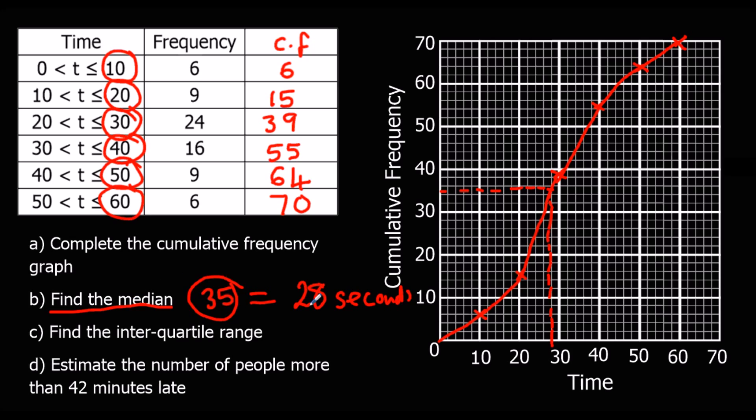The interquartile range. The upper quartile and lower quartile. The median is half the data, which was the 35th piece. So the quarters are, well, so we're going to go one quarter of 70 is half of this. So 17.5. So just underneath 18. So we go just underneath 18 to the line and down from there, which is, well, 21 or 22 seconds. So let's say lower quartile is 22 seconds.